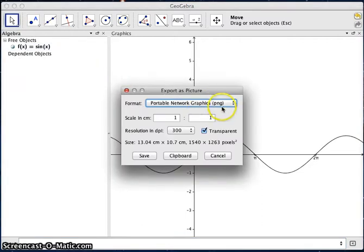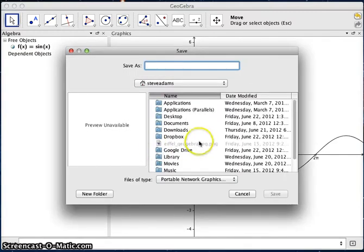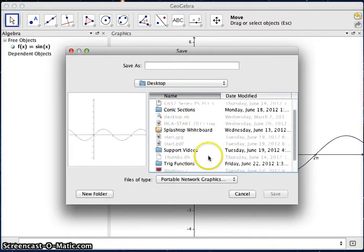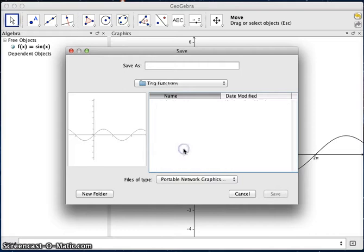I'd recommend just using the PNG format, so you want to save that. Now, what I'm going to do is I'm going to save that to my desktop, and I have created a folder there called Trig Functions. And maybe you just want to call this Problem 1. And .png. And then just go ahead and save that.